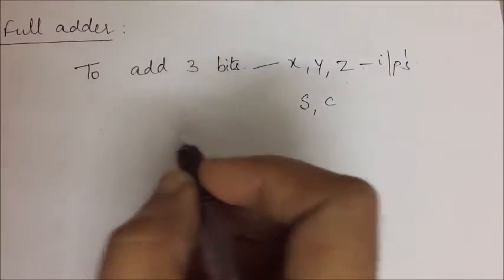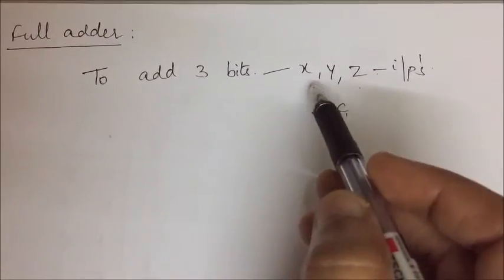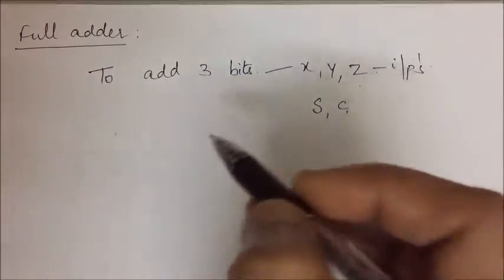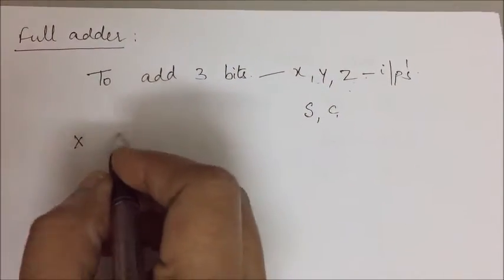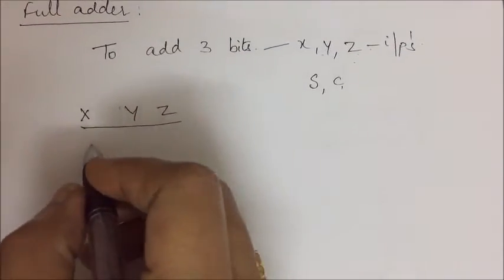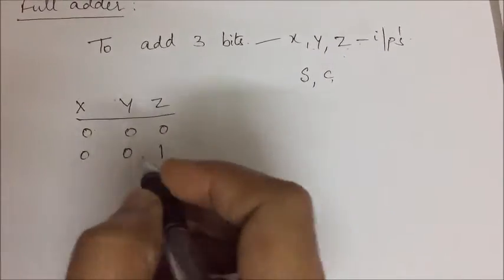So we have determined the number of inputs, number of outputs and also we have used representation for inputs as X, Y, Z and outputs as sum and carry. Now we are supposed to determine the truth table. When we have 3 inputs, we have 8 combinations. So let us consider all the 8 combinations here.